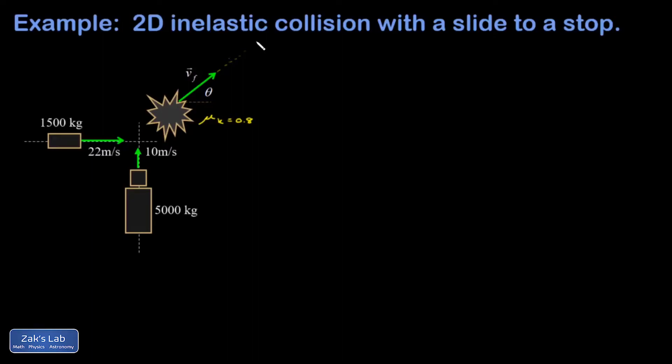Here I have a two-dimensional perfectly inelastic collision between a car and a truck. When they hit each other, they're going to stick together and slide off at some angle, and I'm trying to find the speed of the wreckage right after the collision and what exactly that angle is.